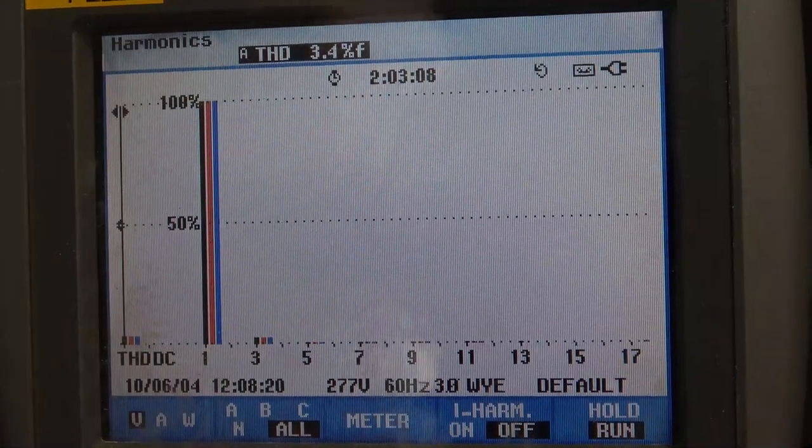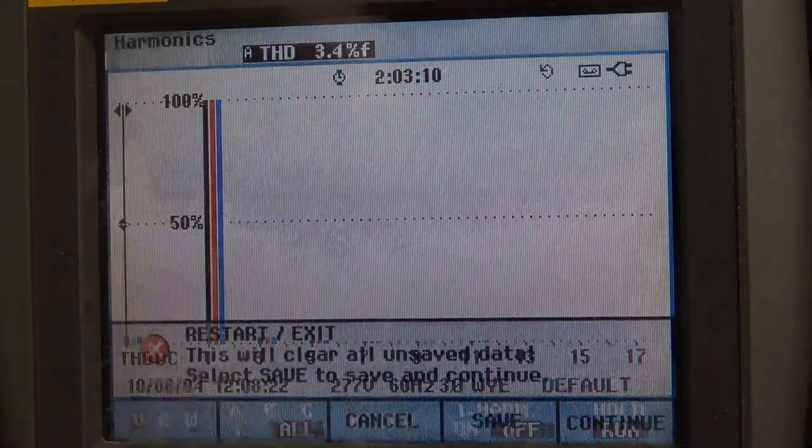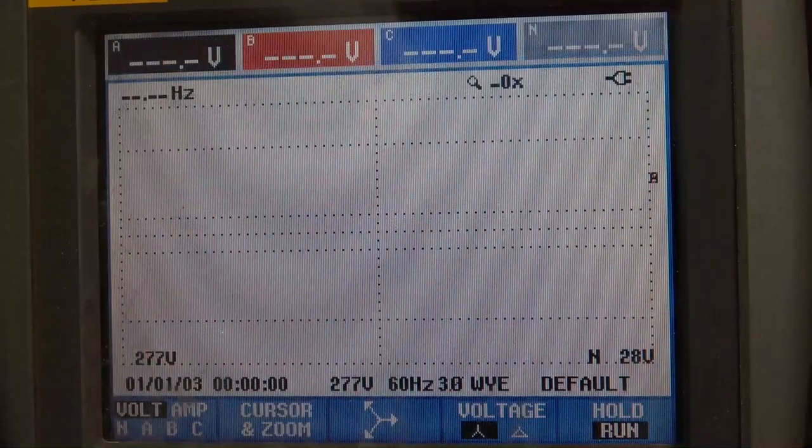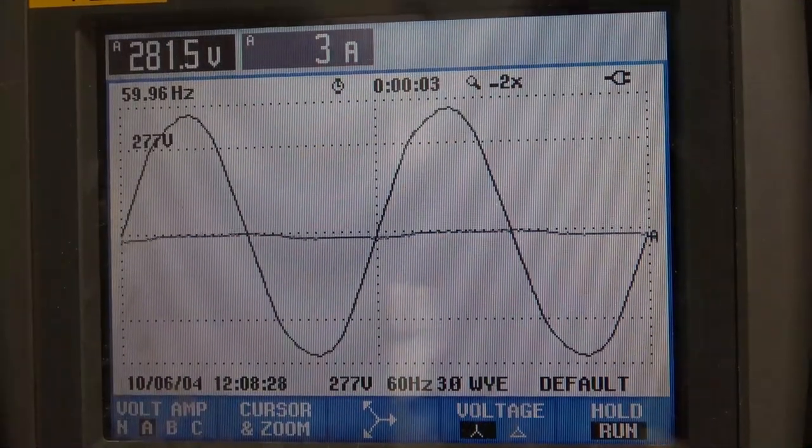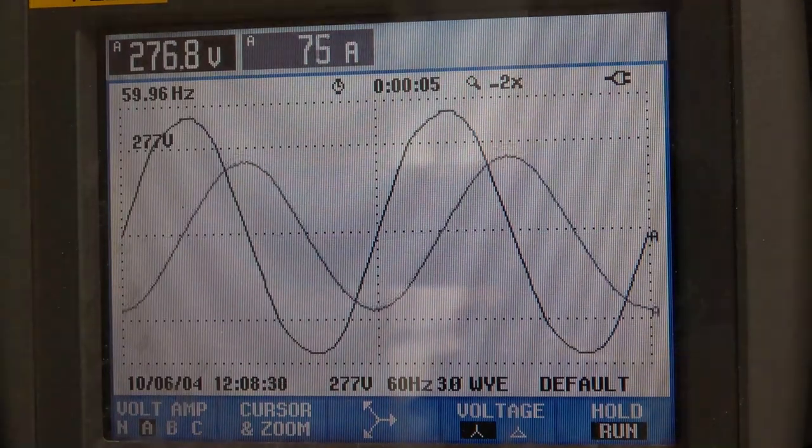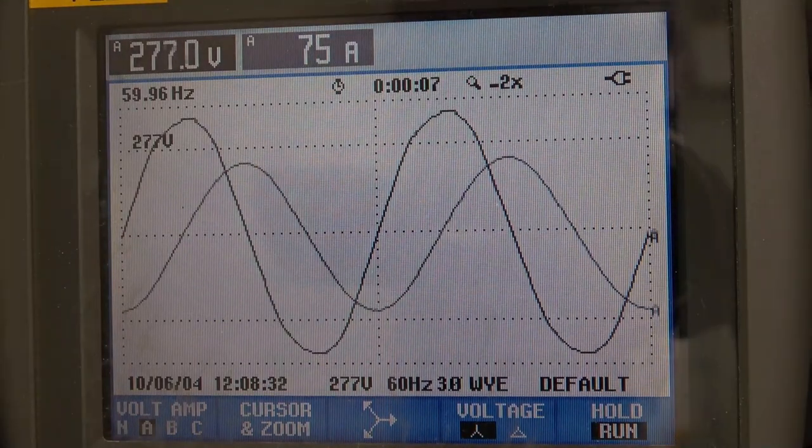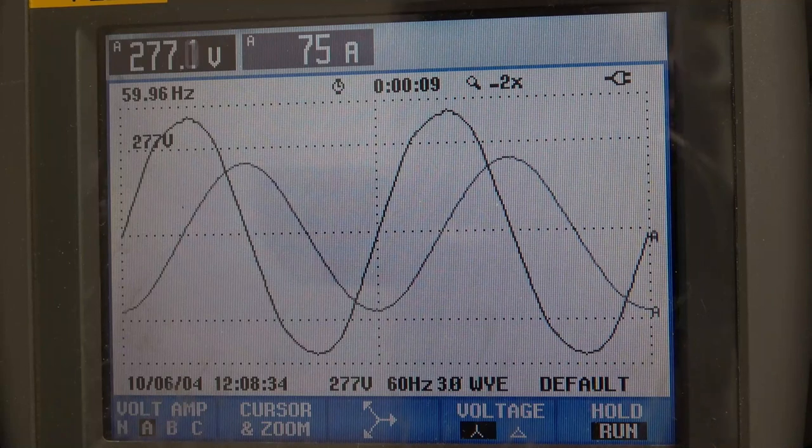Let's look at the waveform here for a linear load, first of all. There's my voltage, and here's my current. The current, even though it's not in phase with the voltage, we say that current is lagging the voltage. The current does look just like the voltage waveform.